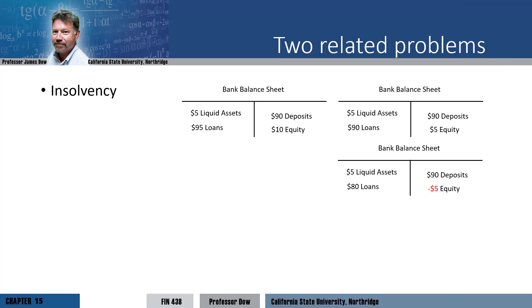If depositors think that a bank might become insolvent, they will likely try to pull their money out of the bank. If only a few depositors do this, say they try to pull $5 out of the bank, the bank is okay, since it has $5 of liquid assets it can use to pay off the depositors. However, say that the depositors want to pull out $20 out of the bank. Now the bank is in trouble. It only has $5 immediately available. We say that the bank is illiquid.